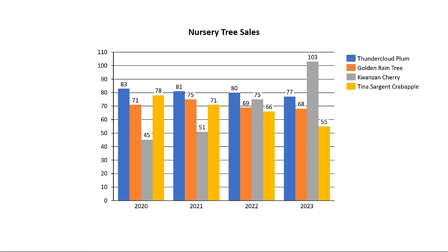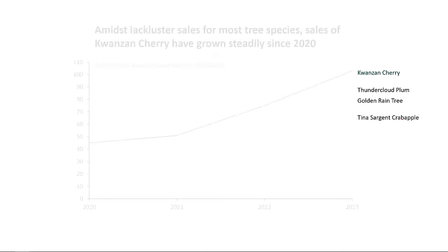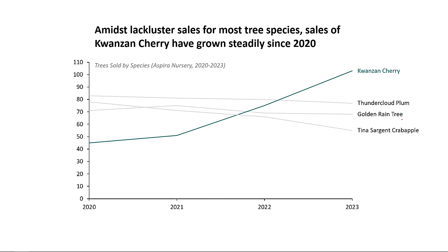Let's take this chart as an example. It shows tree sales over the last few years for a local tree nursery, but it's unclear what they're really trying to tell me. Compare that instead with this second chart, which shows the exact same data, but the message is much more clear.